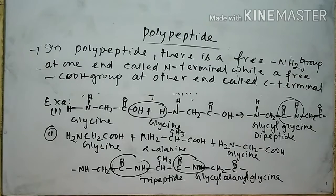In a polypeptide there are two terminals — one is the N-terminal and another is the C-terminal. In a polypeptide, there is a free NH₂ group at one end called the N-terminal, while a free COOH group is at the other end called the C-terminal.